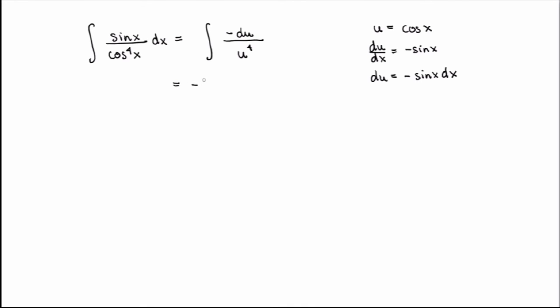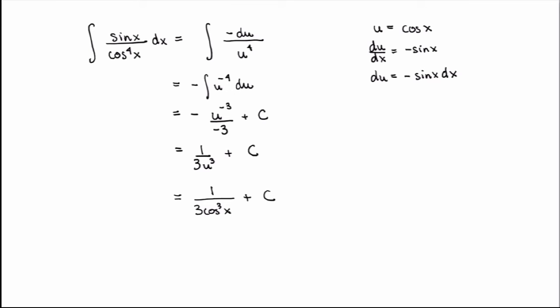This is just minus the integral of u to the minus four, which I can certainly integrate. I get minus u to the minus three over minus three, plus a constant of integration — in other words, one over three u cubed plus my constant. Don't forget you need to rewrite everything in terms of x, so substituting back I get one over three cosine cubed of x plus the constant of integration. You can always check your answer: taking the derivative using the chain rule gives exactly sine of x over cosine to the fourth power of x.